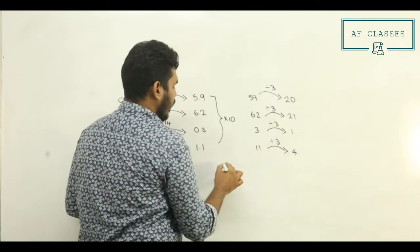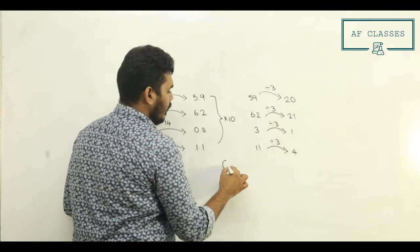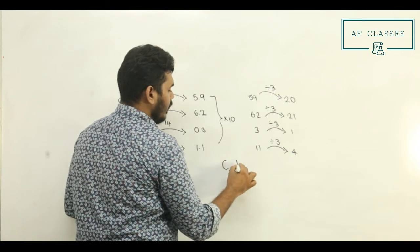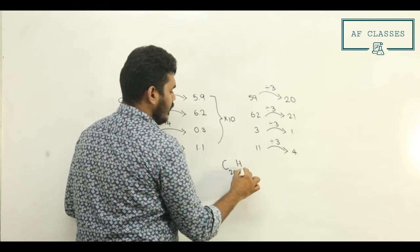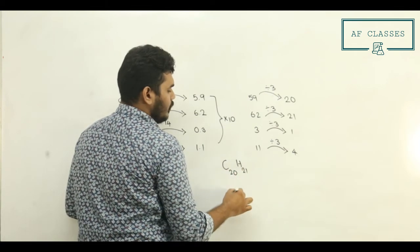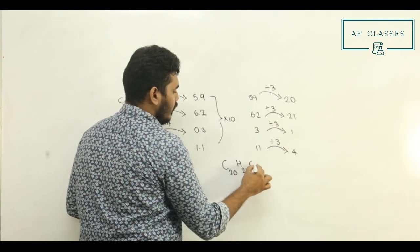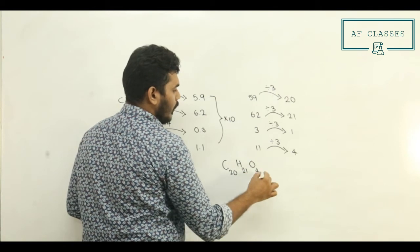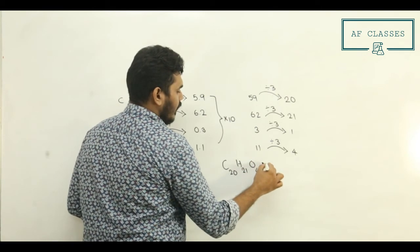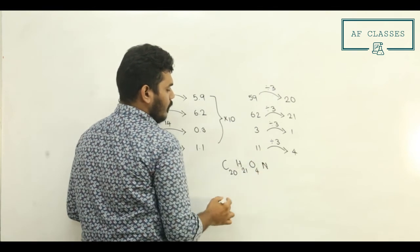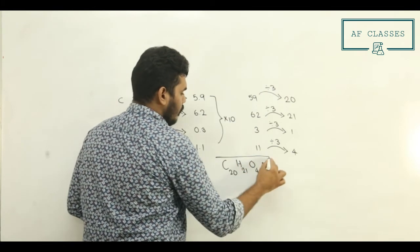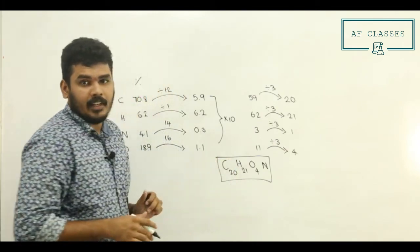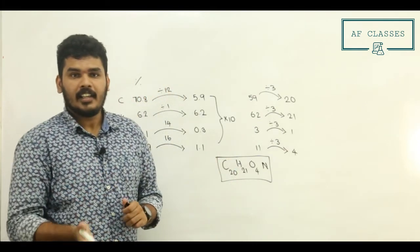Therefore the empirical formula is: Carbon 20, Hydrogen 21, Oxygen 4, Nitrogen 1. The answer is Option D.